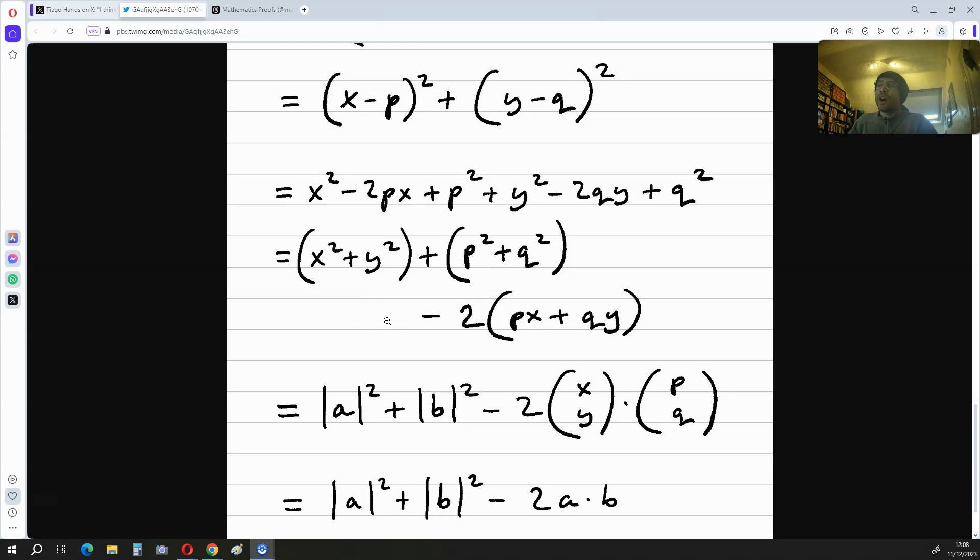Because the vector a is x, y, then the magnitude of a squared is going to be x squared plus y squared, so this up here transforms into this. Because the vector b is p, q, then the magnitude of b squared is simply p squared plus q squared. So we replace this up here with this down here.